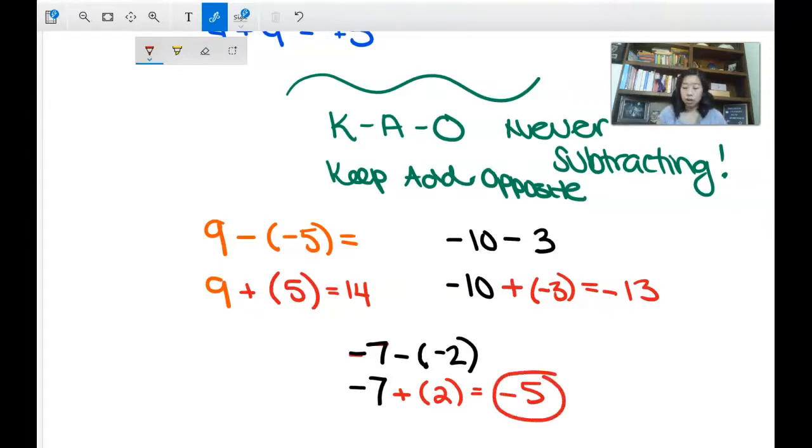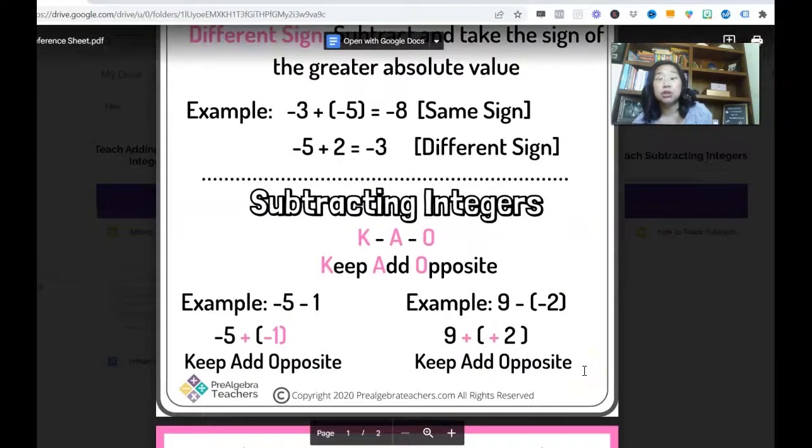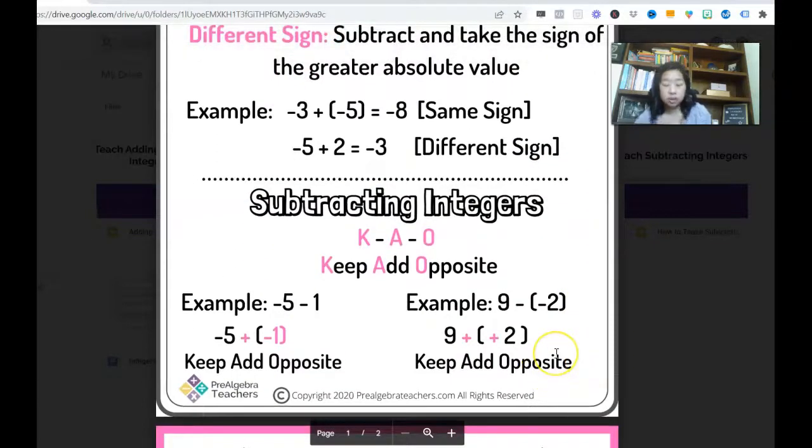And those are the rules. Those are my adding and subtracting rules. Again, if you'd like to grab my integers reference sheet, so you can see here, here are the rules for adding integers, and here are the rules for subtracting integers. We've got our KAO. There's a couple of examples.